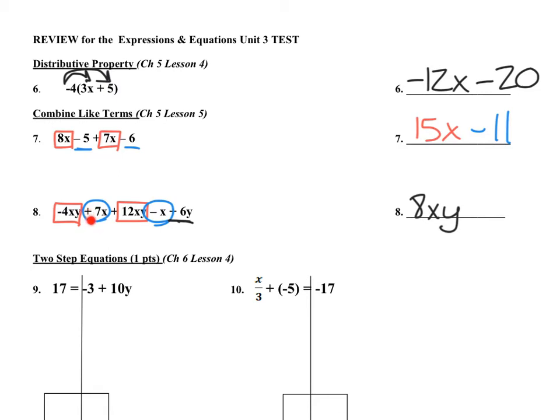Then I look at my x's, a positive 7 and a negative 1, and I get positive 6x's. And then my last one is all by himself, negative 6y, he stays negative 6y. So my final answer, 8xy plus 6x minus 6y.